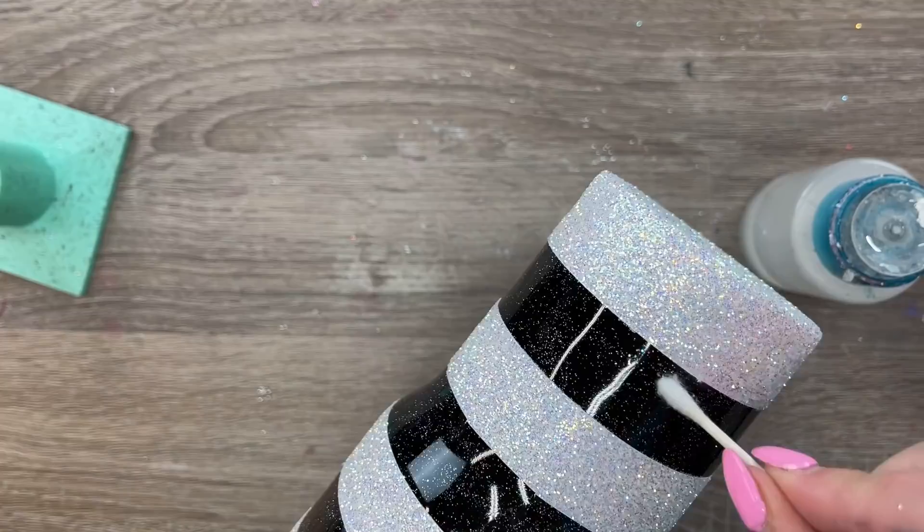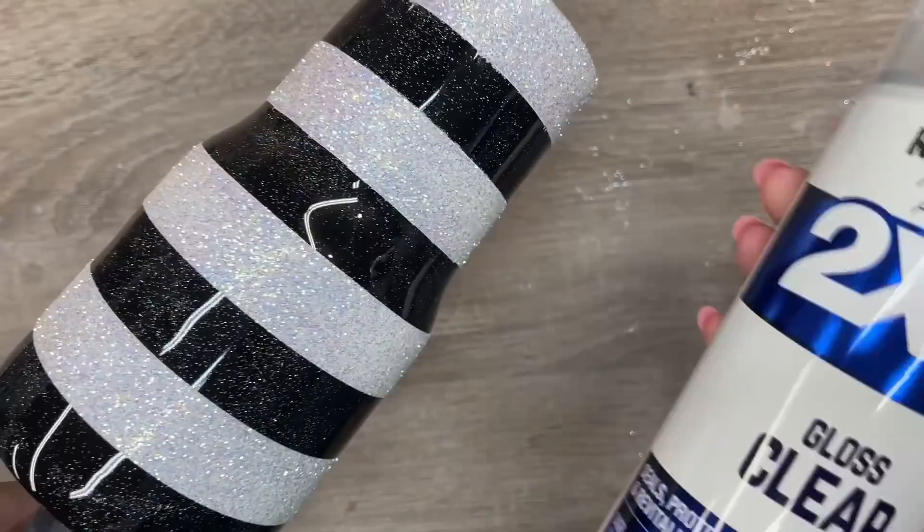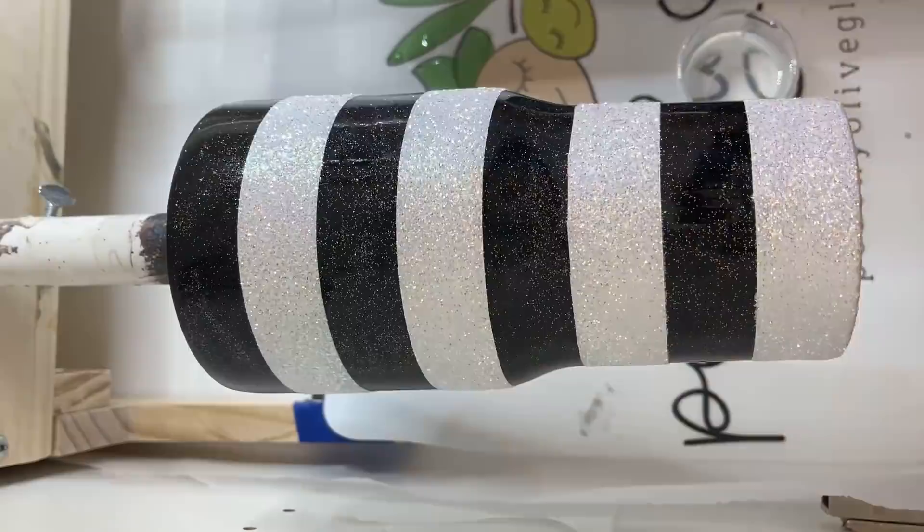I'm going to apply a generous coat of this Rust-Oleum 2x Clear Gloss Spray Paint, just so we can really lock in that glitter.